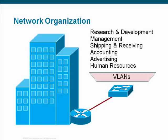Another example of a VLAN implementation might be an Enterprise Headquarters building. In such a building, there may be many departments, such as Research and Development, Management, Shipping and Receiving, Accounting, Advertising, and Human Resources. Assigning each department to its own VLAN leads not only to broadcast containment, but also better network organization.